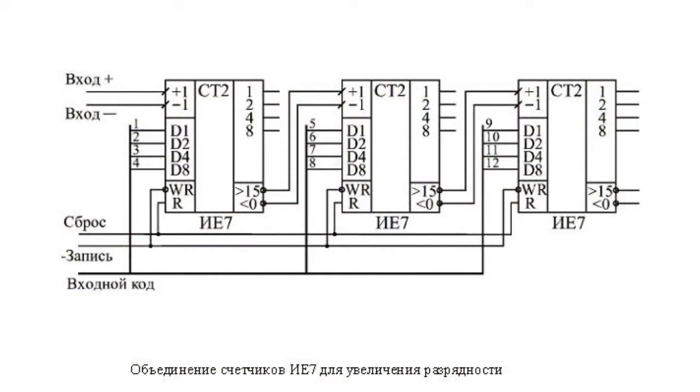Counters IE7 and IE6 can be connected in order to increase their capacity. To do so, connect the carry outputs of the low-order counters producing low-order carry bits with the inverted inputs of the high-order counters producing high-order carry bits.